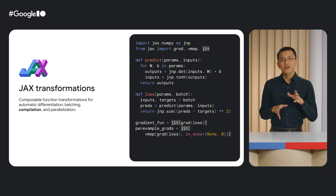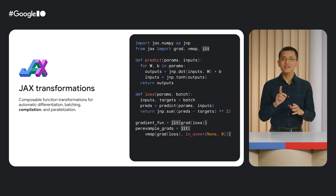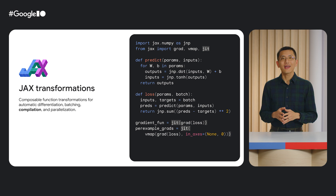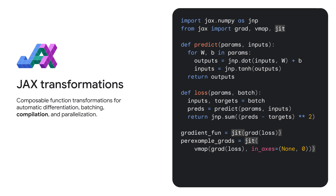JAX can also perform just-in-time compilation, or JIT, to create optimized code that runs super fast. Compilation offers a host of advantages: it cuts down on latency and lets you utilize your hardware more efficiently. It eliminates unused outputs and unnecessary recomputations, so you don't have to manually rewrite your code. It can combine, or fuse, operations and manages their organization, maximizing hardware utilization and ultimately leading to faster function execution.